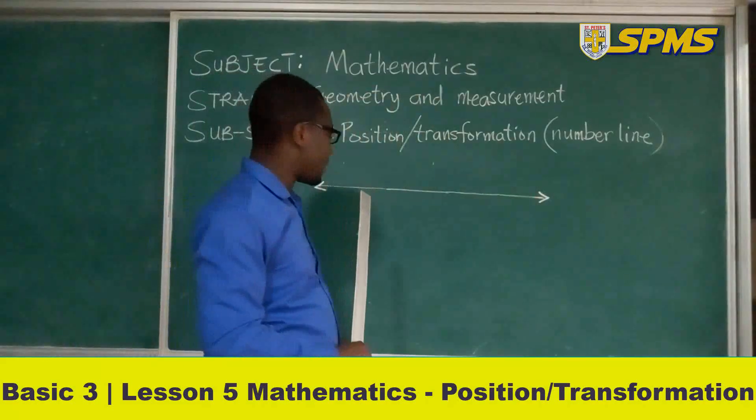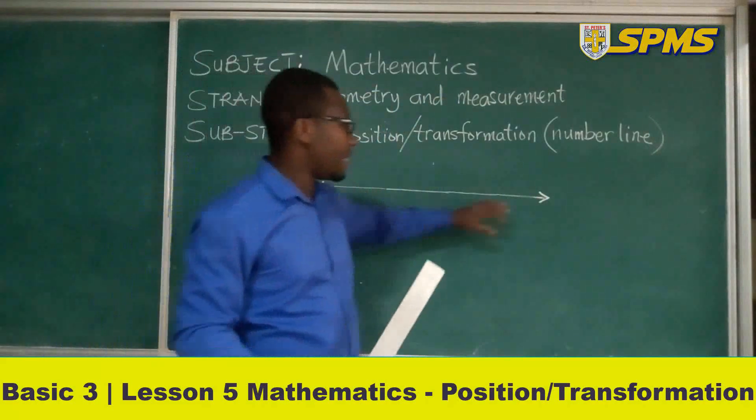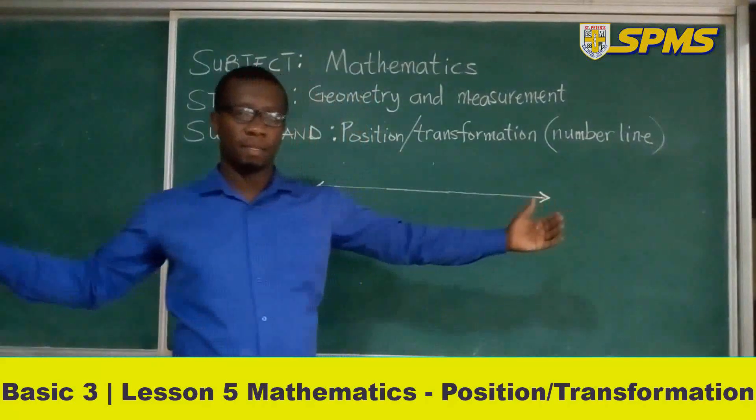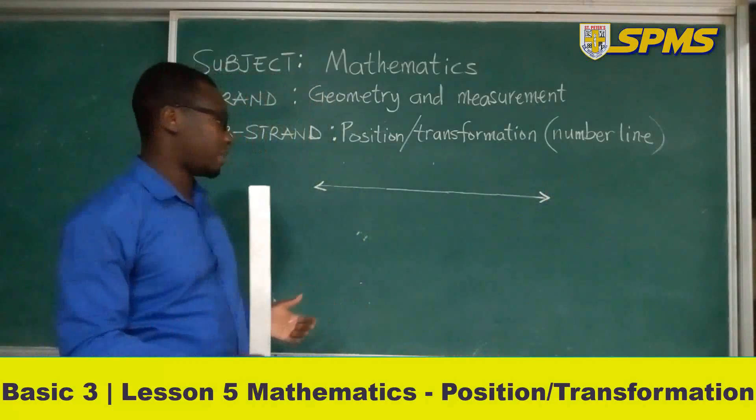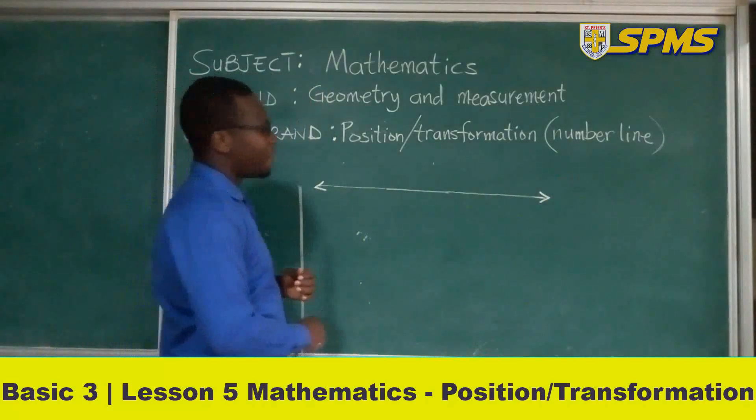Then we can put an arrow. The arrow tells us that the number line can extend from one point to another. It has no limits. Now we have our line.